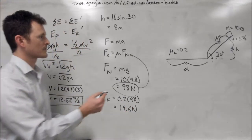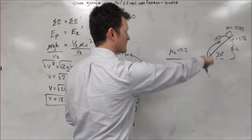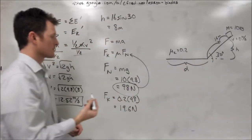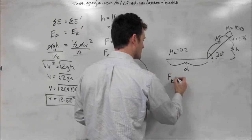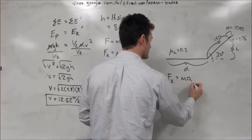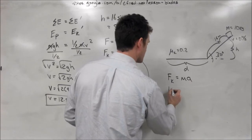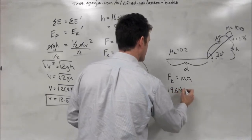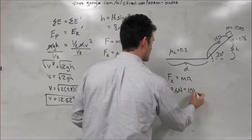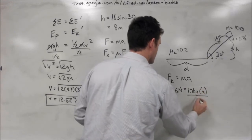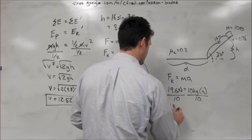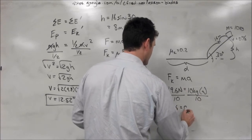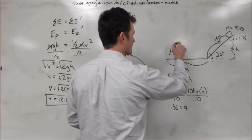So we can go ahead and plug that into our force equation, since that's the only force we have acting on our box, and take force k equals mass times acceleration, which is equal to 19.6 equals 10 times whatever our acceleration is. We divide both sides by 10, and we end up with an acceleration of 1.96 meters per second squared.